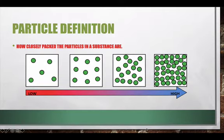The particle definition of density is very similar. Instead of talking about stuff it's about the particles. So how closely packed the particles are in a substance. Something with a low density would not have particles that are very close to one another and something with a high density will have particles all compacted into a very small space.